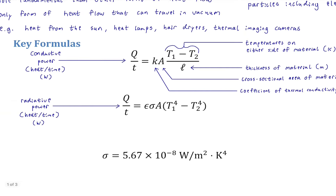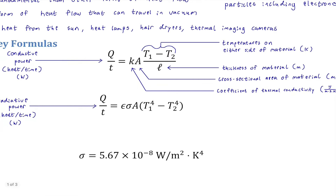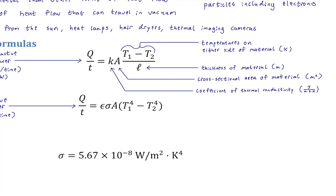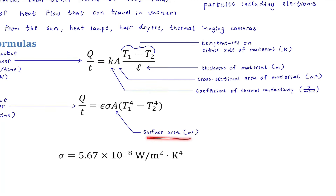Radiative power is also Q over T in watts, but transmitted via radiation with different constants. The surface area here is a full 3D consideration — for a sphere it's 4πr². This differs from the conduction formula's cross-sectional area. The surface temperature T1 is raised to the fourth power — a notably high power — reflecting how strongly temperature affects radiation.